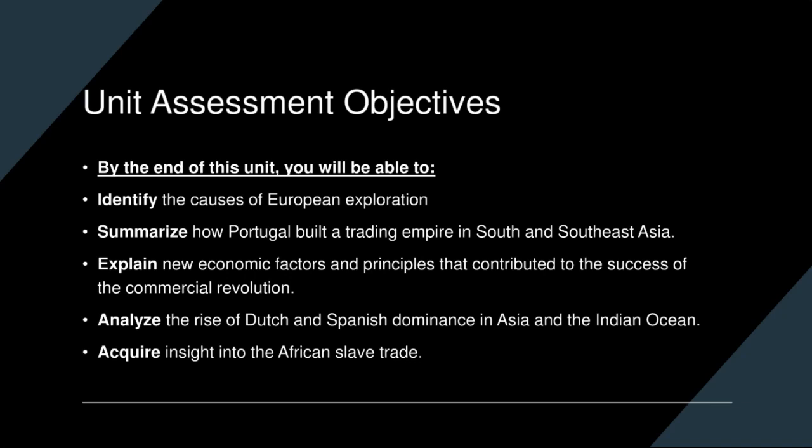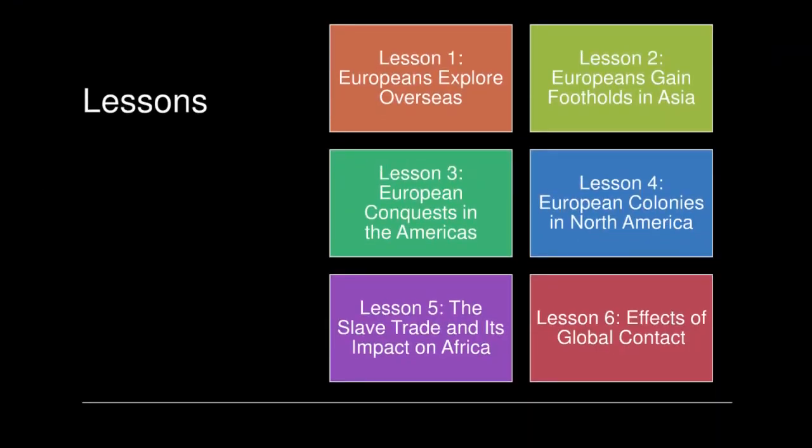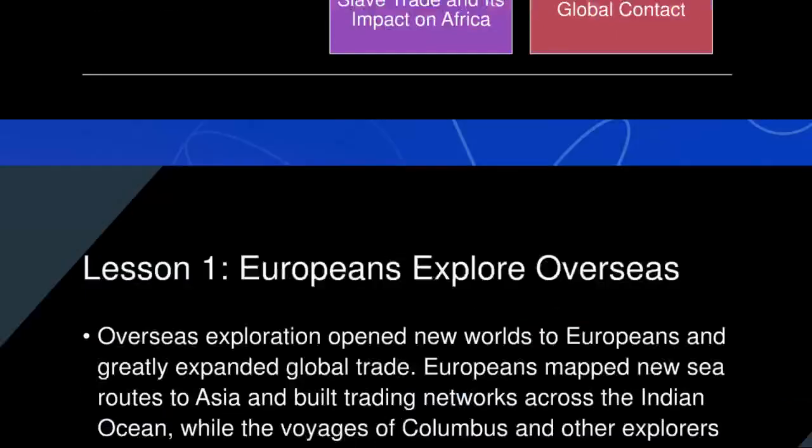Let's begin by taking a look at the list of lessons: beginning with lesson one, Europeans Explore Overseas; two, Europeans Gain Footholds in Asia; three, European Conquests in the Americas; four, European Colonies in North America; five, the Slave Trade and its Impact on Africa; and wrapping up with lesson six, the Effects of Global Contact.